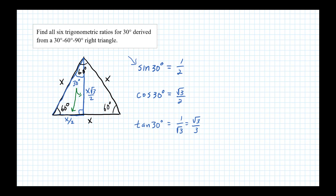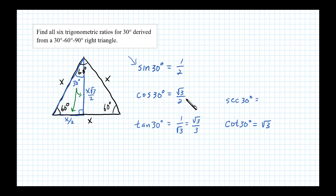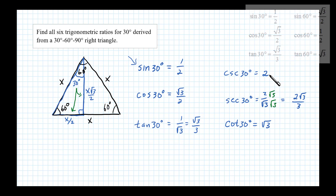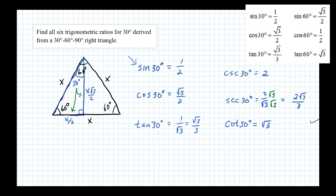Cotangent is the reciprocal of tangent, so cotangent of 30° is the reciprocal of √3/3, which is just √3. Secant is the reciprocal of cosine, so secant of 30° is 2 over √3. Rationalizing by multiplying by √3, we get 2√3/3. Cosecant is the reciprocal of sine, so cosecant of 30° is the reciprocal of 1/2, which is just 2. And there are all 6 trig ratios — we should memorize those for 30 degrees.